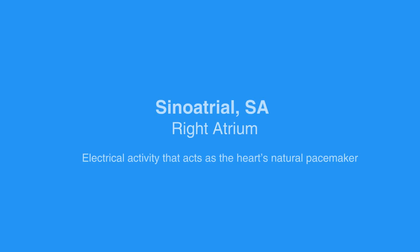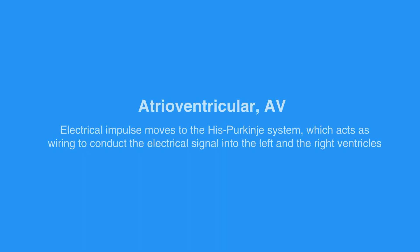The electrical pathways of the heart begin in the sinoatrial, or SA, node in the right atrium. Together, they create the electrical activity that acts as the heart's natural pacemaker. This electrical impulse then travels to the atrioventricular, or AV, node.